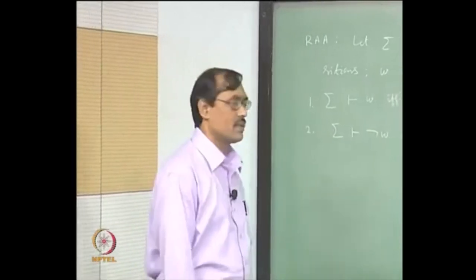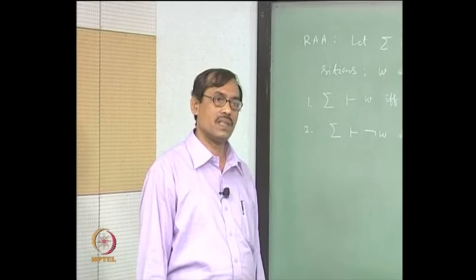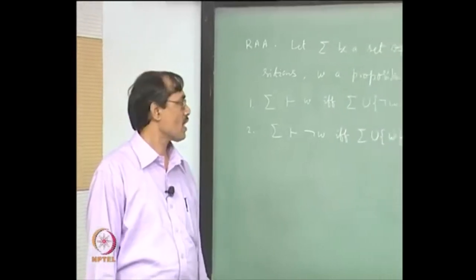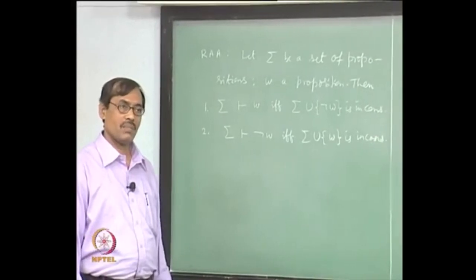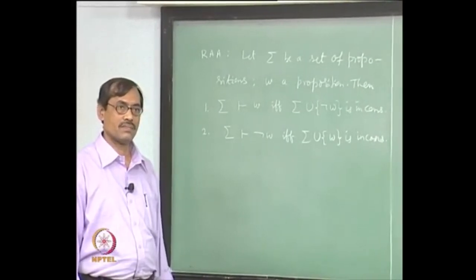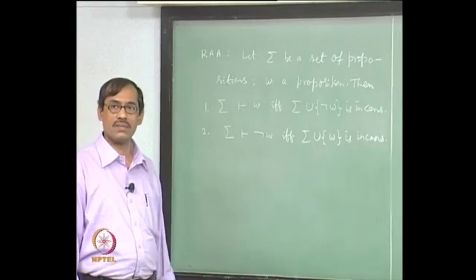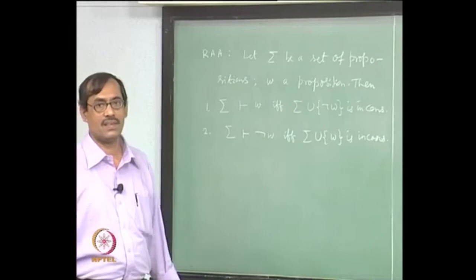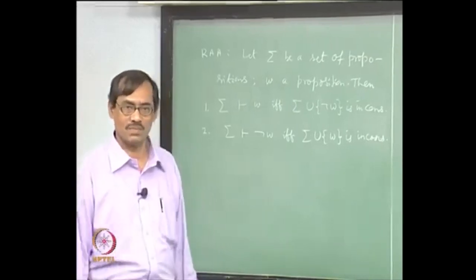Then you add not-w because there is a new premise now — sigma union not-w. You have already got w, now you have got not-w again, but you have used premises from sigma union not-w. Since we have got both w and not-w, sigma union not-w is inconsistent. That is easy — that follows just from our definition of proofs.